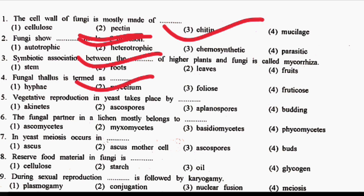Next question: vegetative reproduction in yeast takes place by DASH. Option 1: Conidia. Option 2: Ascospores. Option 3: Aplanospores. Option 4: Budding. The correct answer is Budding. Yeast is a unicellular fungus — its scientific name is Saccharomyces cerevisiae.